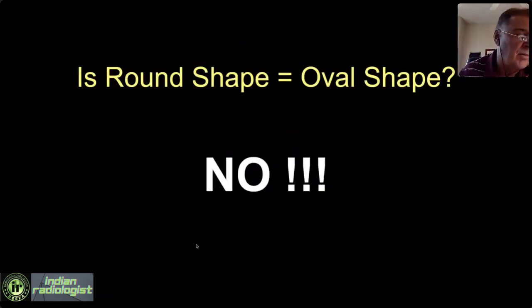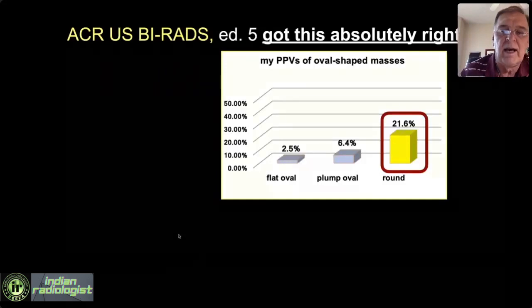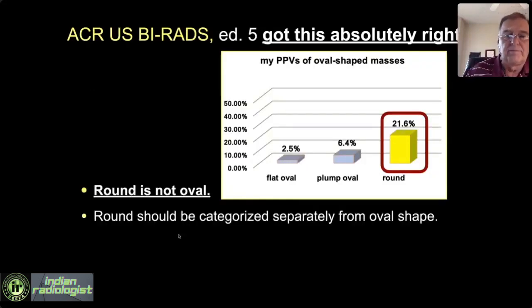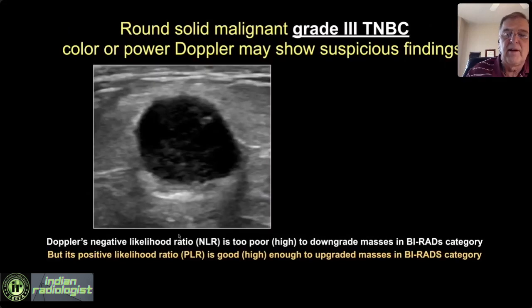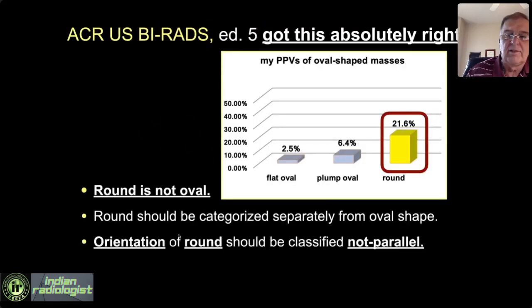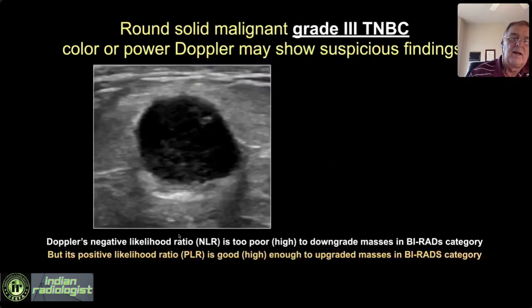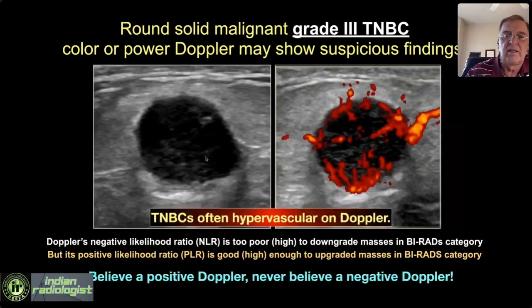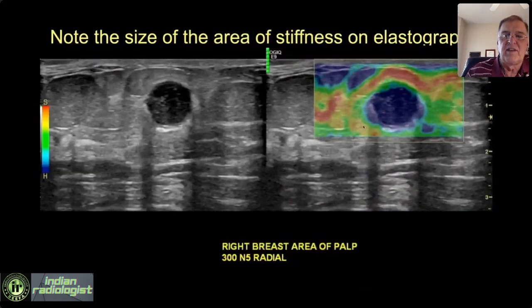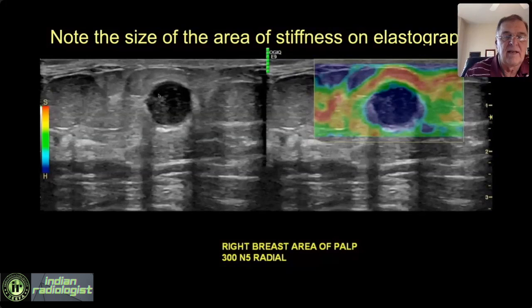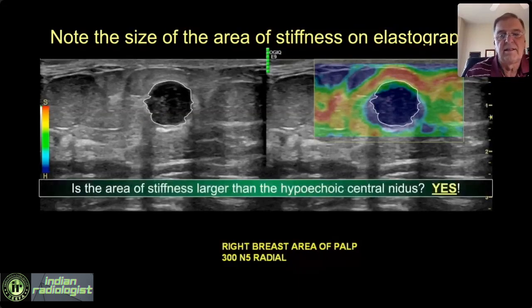The same strict standard applies to round as to oval — approximately round is not round, it's irregular. We want to be strict in our definition of what's round. When I compare my PPVs for round with the readers', theirs was twice that of mine — about 40-some percent — because they were calling stuff round that I was calling irregular. Here's a lesion I called irregular that a lot of readers called round: notice how hypervascular it is, how stiffness extends outside the hypoechoic central nidus into the echogenic rim, and how it has a thin capsule front and back but a thick echogenic rim on both sides with microlobulations. This is not round.